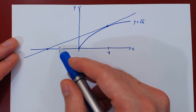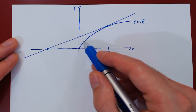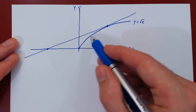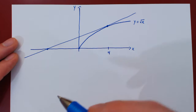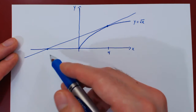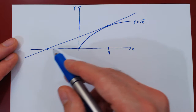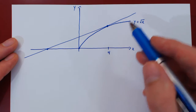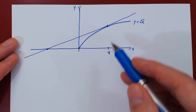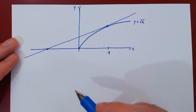The region is clearly the region here. Before we proceed, we have to find the equation of the tangent line to root of x at x equals 4.